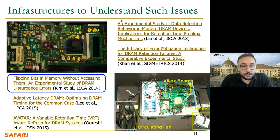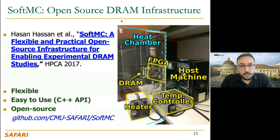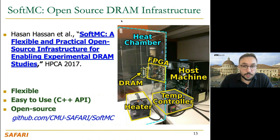I'll talk about a paper published in ISCA 2014 that uses such infrastructure to investigate the RowHammer phenomenon. We have a temperature-controlled environment where we plug modules into FPGAs and program the FPGAs with a soft memory controller called SoftMT, later published in HPCA 2017. This is flexible, easy to use, and an open-source infrastructure.